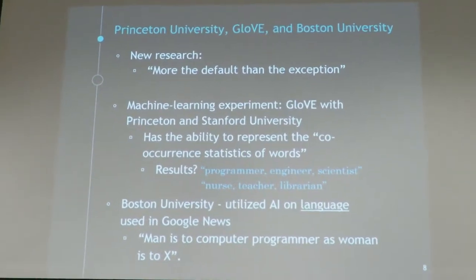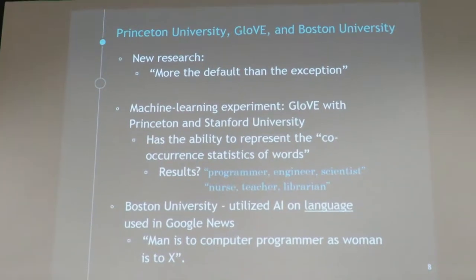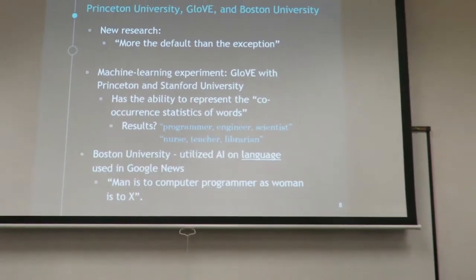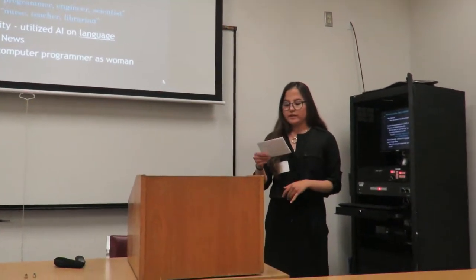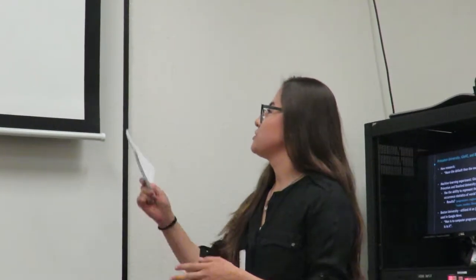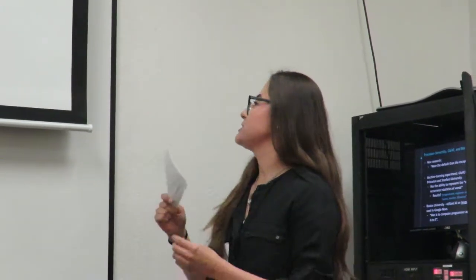An investigation was done by both Princeton and Stanford University, where they designed a machine learning experiment called GLUE, which can represent the co-occurrence of words. When they set it free on 840 billion words on the internet, they found that target words such as programmer, engineer, and scientist were correlated alongside the attribute words man and male, while the target words nurse, teacher, and librarian were alongside the words woman and female.